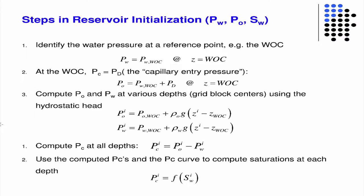The first thing we do is identify the water pressure at a reference point — the reference point being the water-oil contact line — where essentially the saturation of the water is one. In a vertical reservoir, neglecting capillary pressure in the transition region, all of the oil would be on top and all of the water would be on the bottom. At the water-oil contact line, we set the capillary pressure to the capillary entry pressure, the displacement pressure, which we'll see on the capillary pressure saturation curve in a minute.